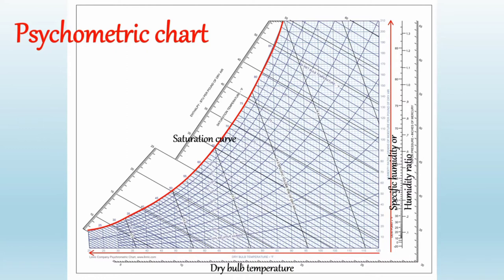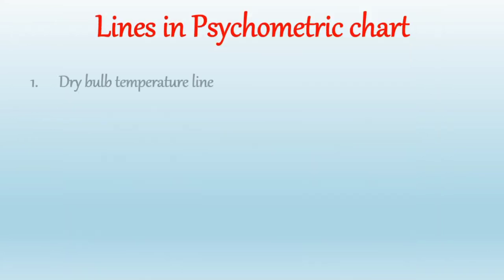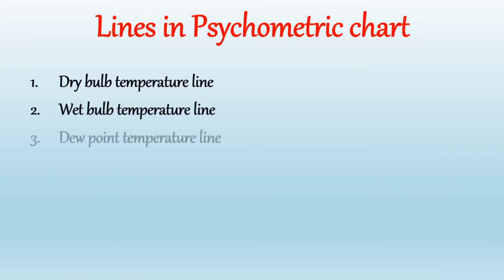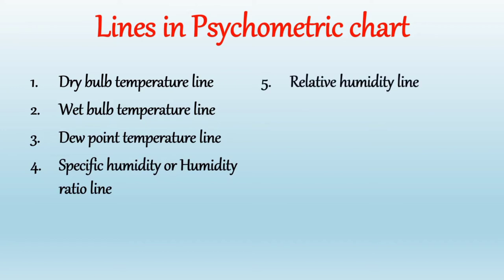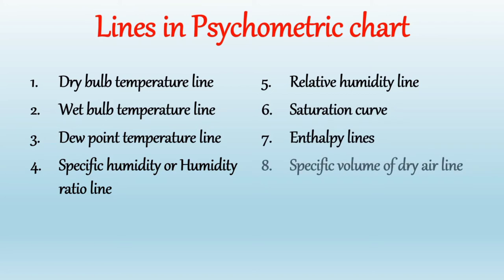In the psychometric chart there are nine different lines: the dry bulb temperature line, wet bulb temperature line, dew point line, specific humidity or humidity ratio line, relative humidity line, saturation curve line, enthalpy line, specific volume of dry air line, and vapor pressure line. Now let's see each of these lines one by one on the psychometric chart.